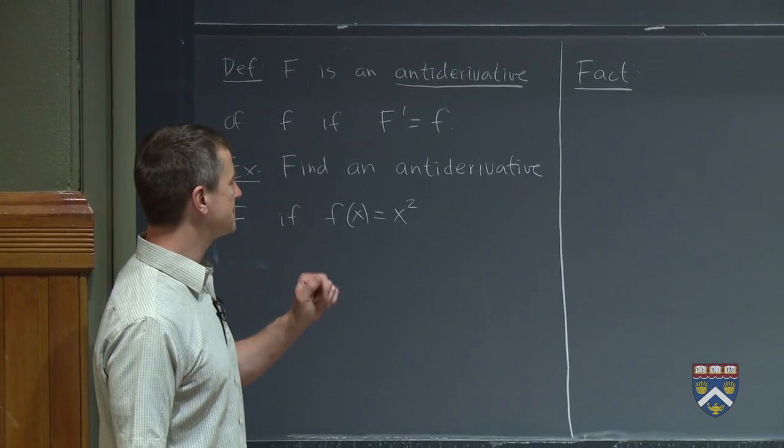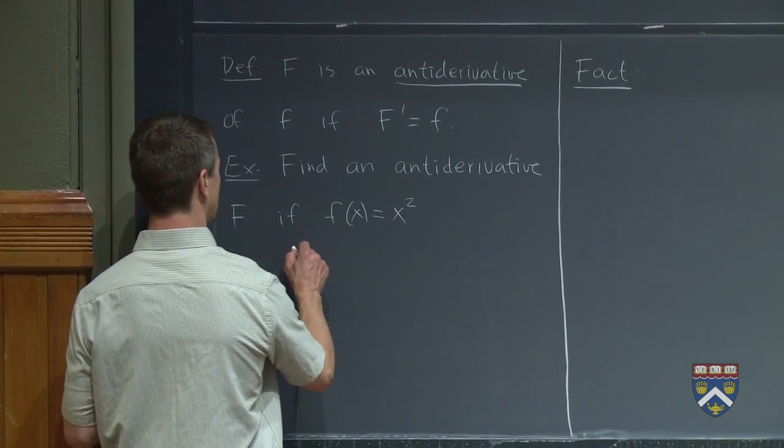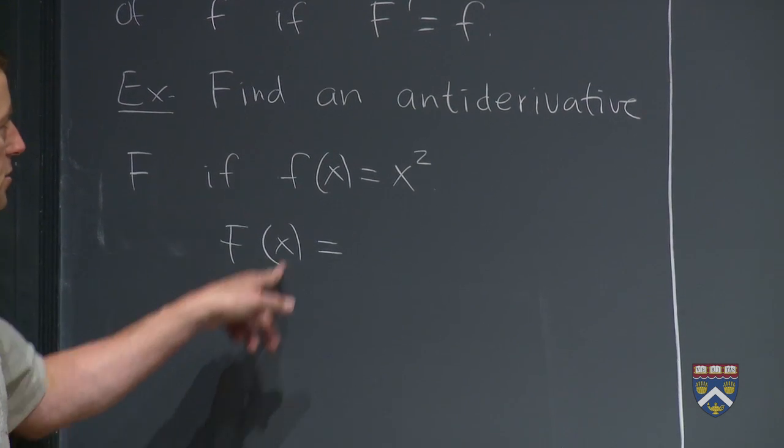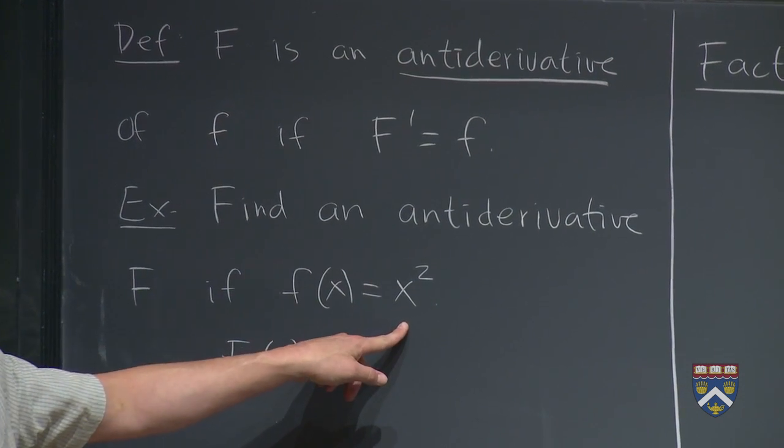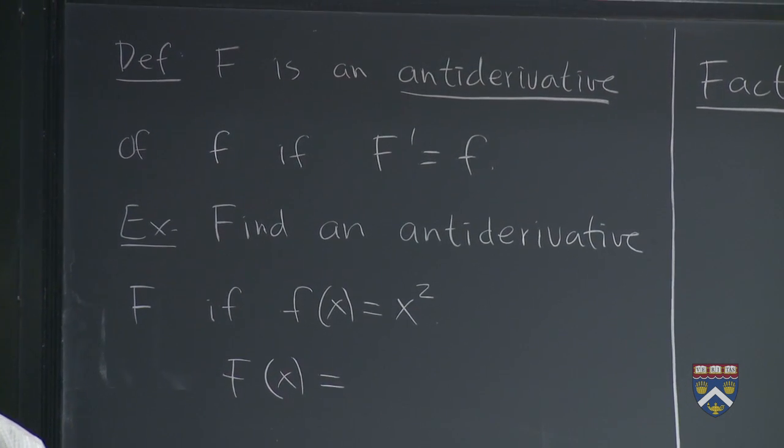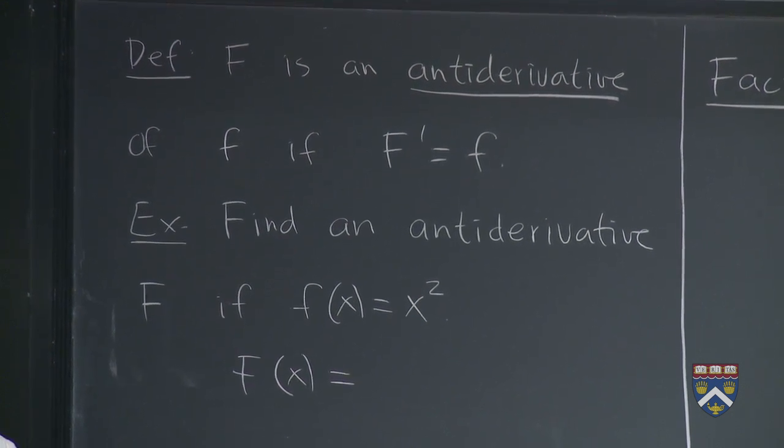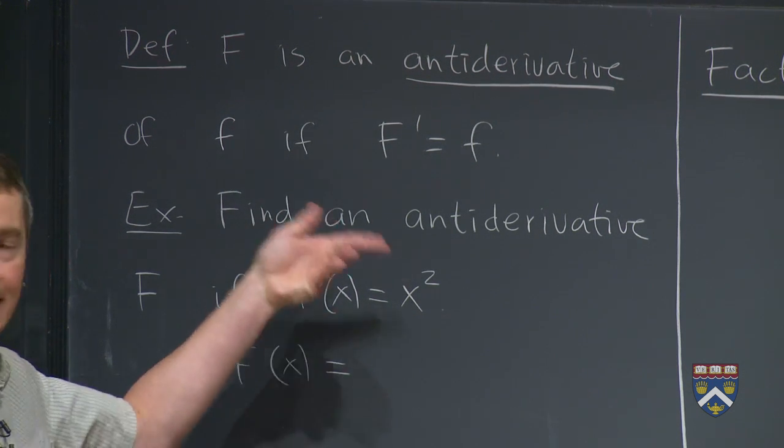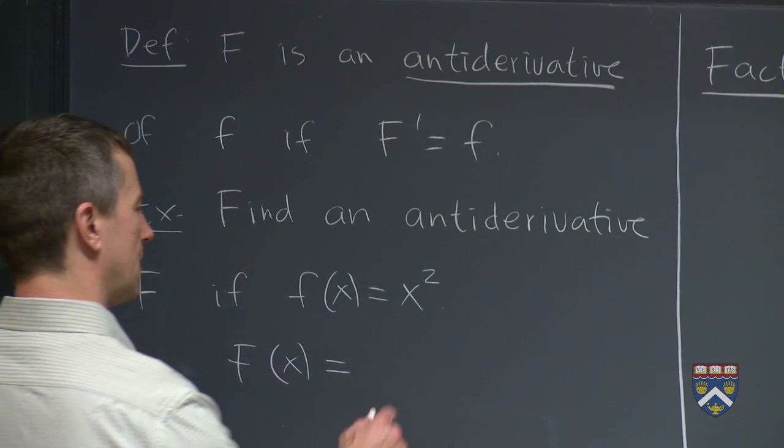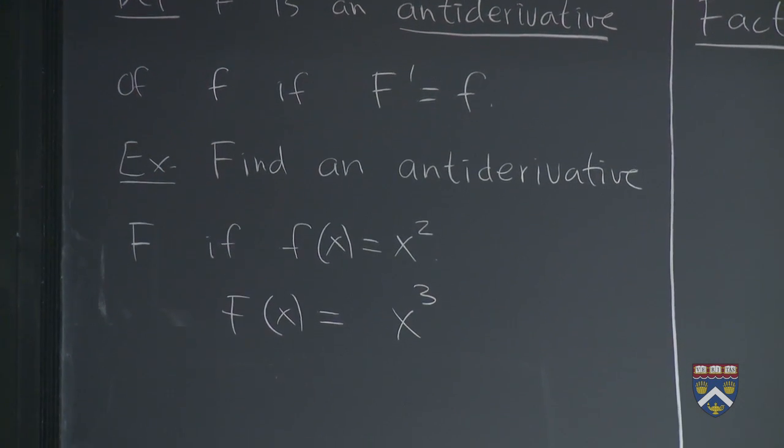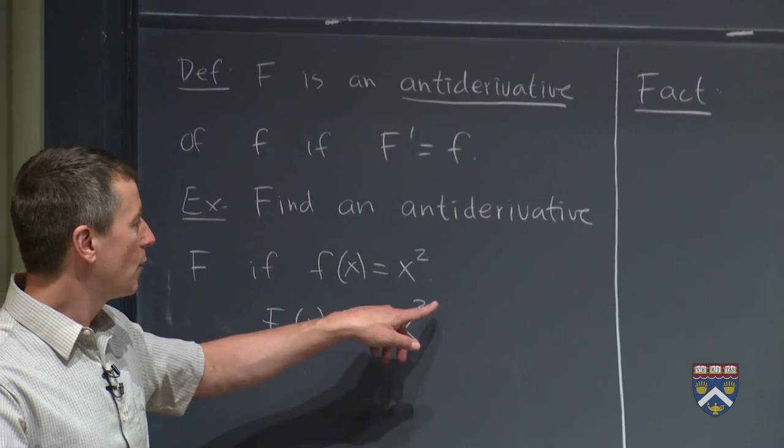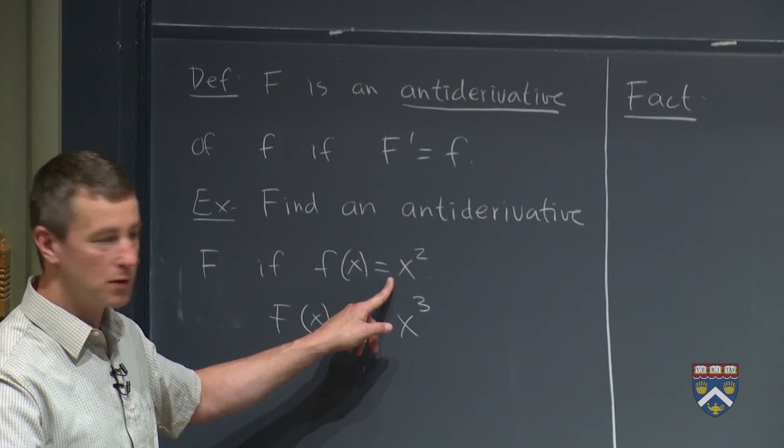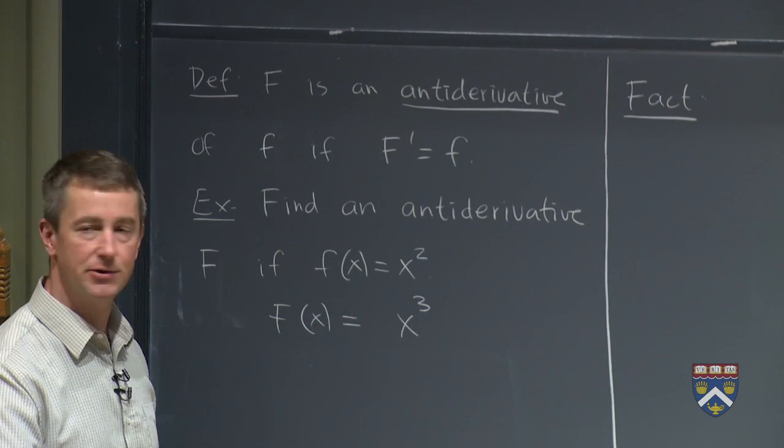So let's practice with an example here to see if we can understand this. Let's suppose that the little f function is x squared. We want to find an antiderivative of that. In other words, can you think of a function capital F so that when you take the derivative, you get x squared? So try to think of that. Pause the recording if you want. You're trying to think about your derivative rule going backwards. What must this function have started out with if it ended up as x squared? Well, it must have started off with something with an x cubed in it, right? Because according to our power rule from way, way back in week five, when we take the derivative of an x cubed, we get 3x squared.